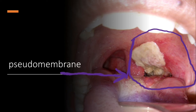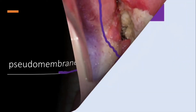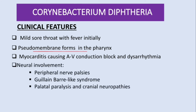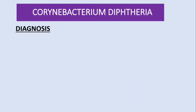Bleeding is another complication. Because the exotoxin mainly targets the heart and neural tissue: in the heart it causes myocarditis, leading to AV conduction blockage and arrhythmias. In neural tissue, involvement can lead to peripheral nerve palsy, a Guillain-Barré-like syndrome, palatal paralysis, and cranial neuropathies.